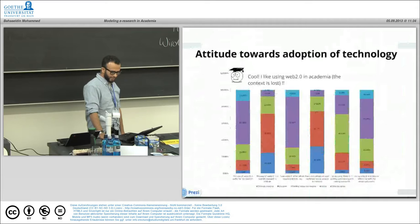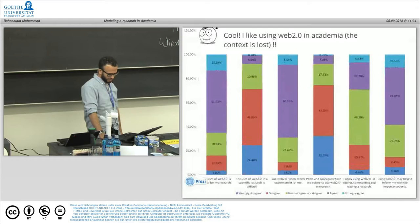Attitudes towards it: they said they like to use web 2.0 in academic context, but the context is lost. They like to use it, but in which context, in which tasks, at which level—it's not clear for PhD students.